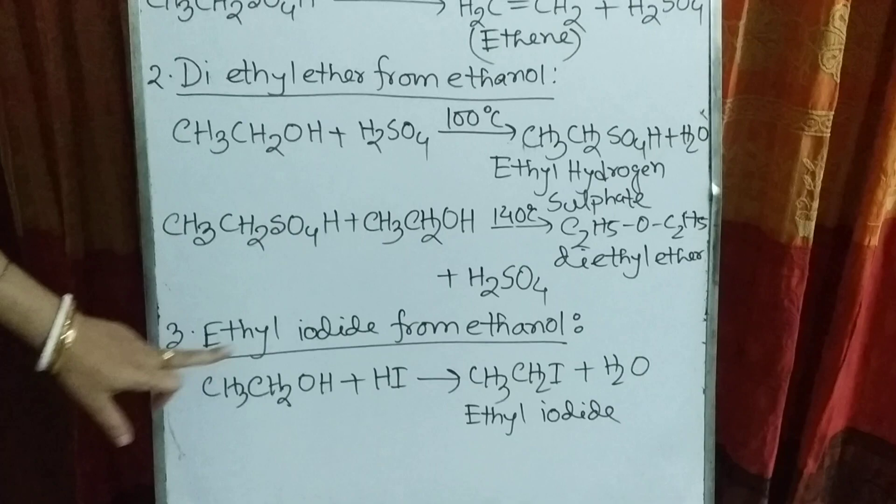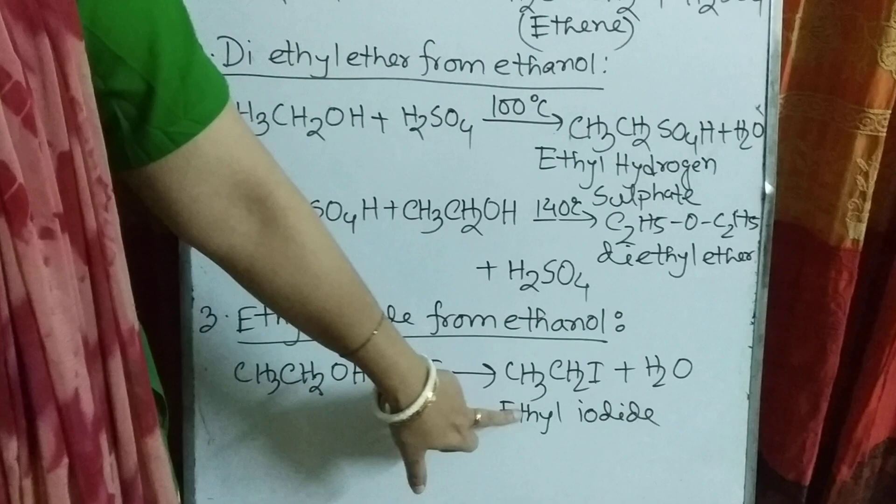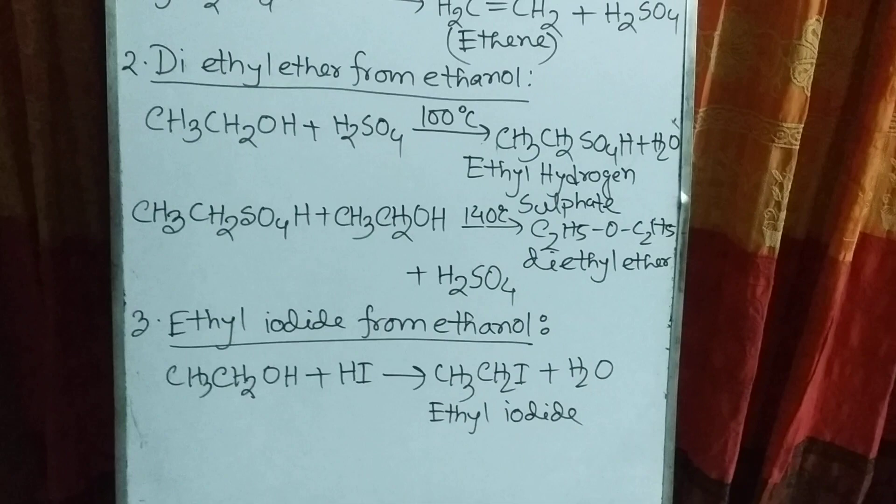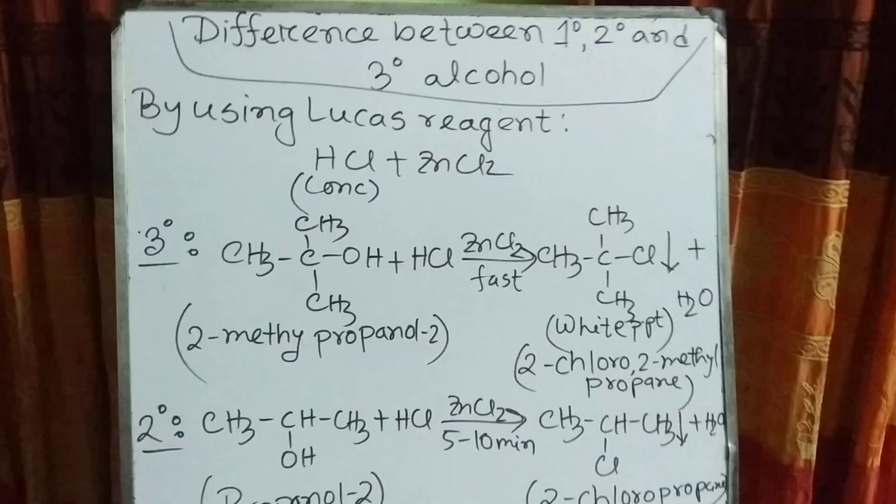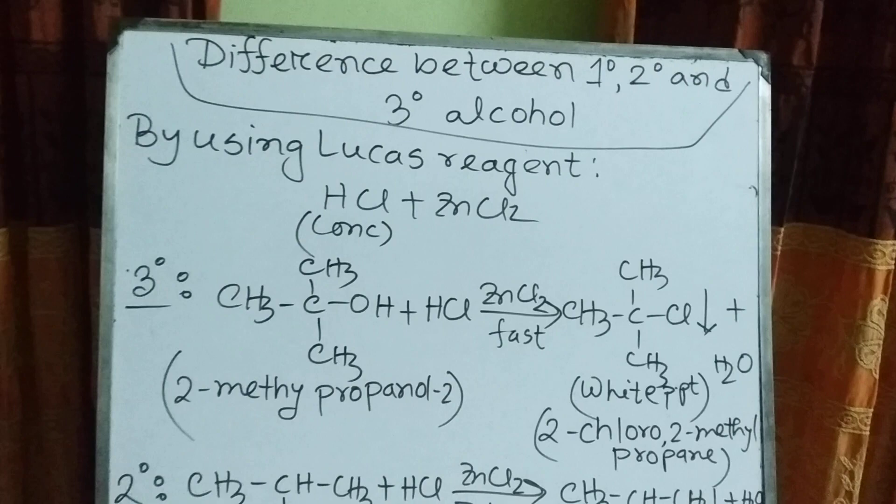Now come to the third property: ethyl iodide from ethanol. When ethanol reacts with hydrogen iodide, it forms ethyl iodide. Now I will discuss the difference between primary, secondary, and tertiary alcohol — that is, 1°, 2°, and 3° alcohol.